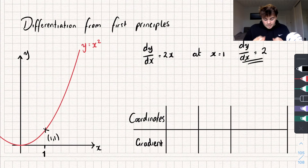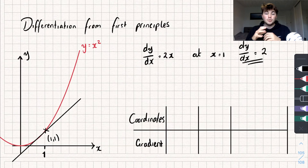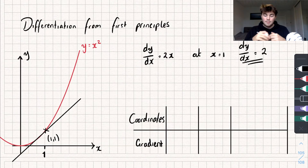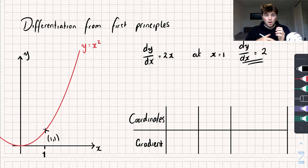But say I didn't know how to differentiate like that. Well, one thing I could do is draw a tangent to the curve like this. It's not a very well drawn tangent but you get the point. I could draw a tangent to the curve at the point x equals 1, find the gradient of this tangent, and then use that as an estimate for the gradient of the curve at that point. And differentiation from first principles kind of works on that idea.